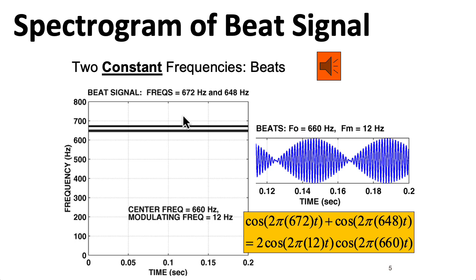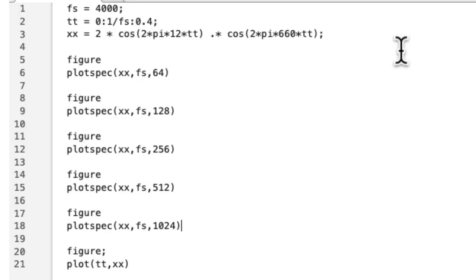Now notice in this particular instance of the spectrogram, you don't see this kind of beating effect. You see two distinct tones that are constant all the way through. But that's only for a particular choice of window size.